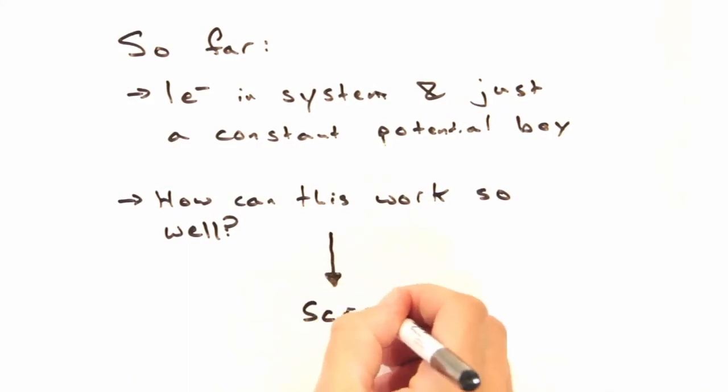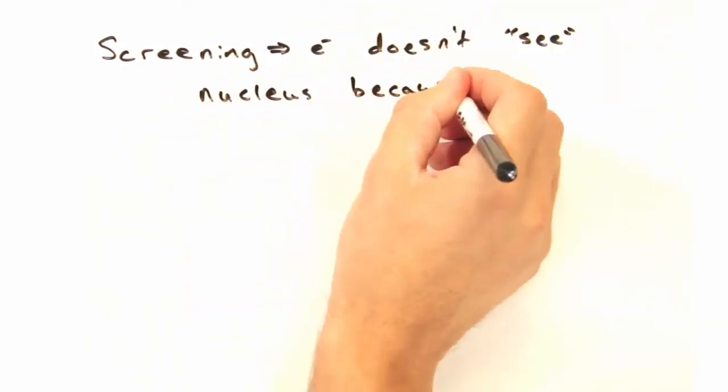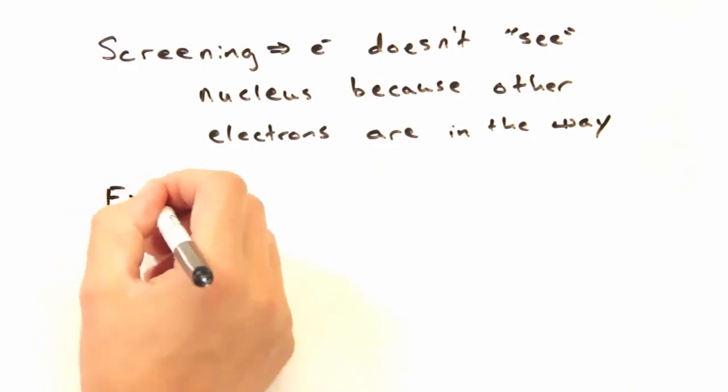In short, it comes down to screening and some assumptions about the type of interactions allowed within a solid. And isn't screening how an electron won't see the nucleus because all the core electrons are in the way?